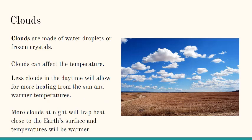Another form of weather are clouds. Clouds are made of water droplets or frozen crystals. Clouds can affect the temperature. Less clouds in the daytime will allow for more heating from the sun, and therefore warmer temperatures. More clouds at night will trap heat close to the Earth's surface, and temperatures will be warmer.